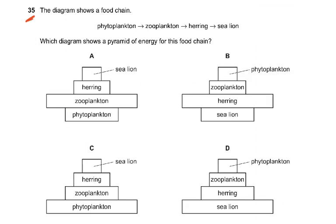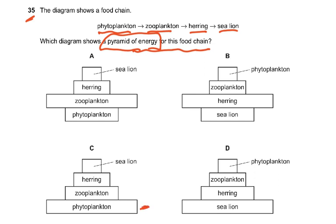Question 35: The diagram shows a food chain — phytoplankton, zooplankton, herring, and sea lion. Which diagram shows a pyramid of energy for this food chain? In a pyramid of energy, the bottom must be the biggest and must represent the plant — in this case phytoplankton. Then zooplankton has less energy, then herrings, then the sea lion at the top. The answer is C. Sea lion must be at the top as the fourth trophic level.